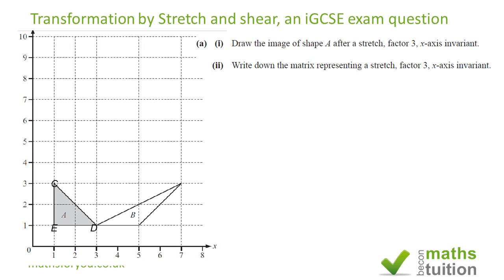As we know from other videos, if the x-axis is the invariant line, the new y-coordinate of any given point is three times the old y-coordinate because the stretch factor is 3. So y' = 3y. Point C has a y-value of 3, so C' will be at y = 9. Point E has a y-coordinate of 1, so the new coordinate for E' will be 3.